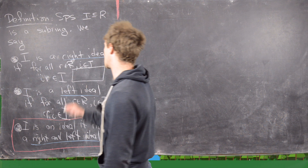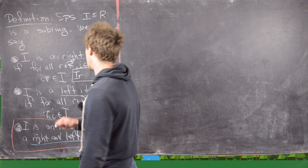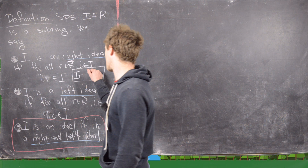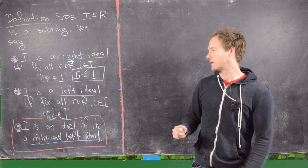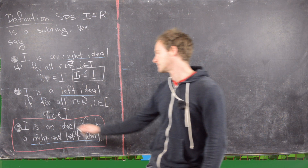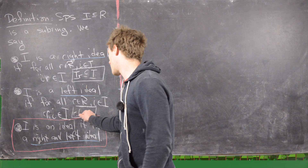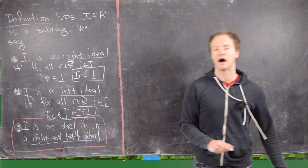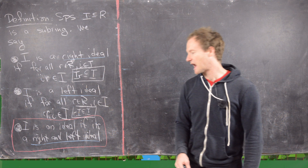It's a left ideal if for all elements r of the ring and i of the ideal, r times i is inside the ideal — in other words R·I is a subset of I, so you absorb from the left. And then finally, I is called an ideal if it is both a left and a right ideal.